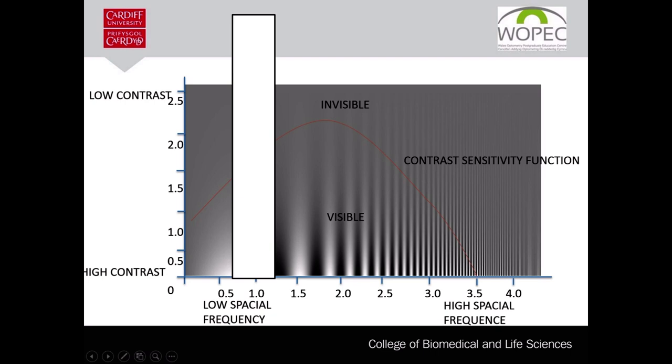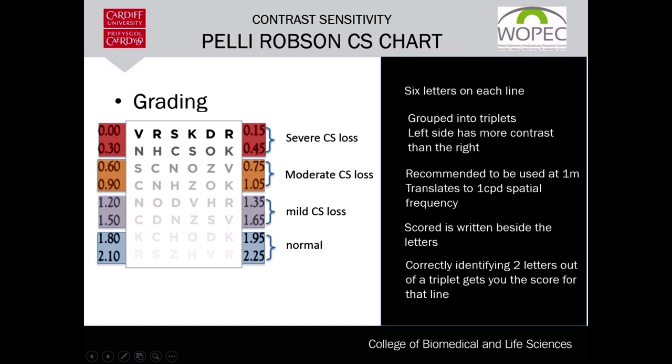The Pelli-Robson test measures different contrast levels, from highest to low contrast, at one spatial frequency — 1.0 cycles per degree at one meter. You can test other spatial frequencies by changing the testing distance; for example, using the chart at two meters tests 2 cycles per degree. To measure contrast using the Pelli-Robson chart, a client can only be given a score if they read at least two of the three letters in a triplet on a line. The chart has six letters per line grouped into two triplets, with the left side having more contrast than the right.